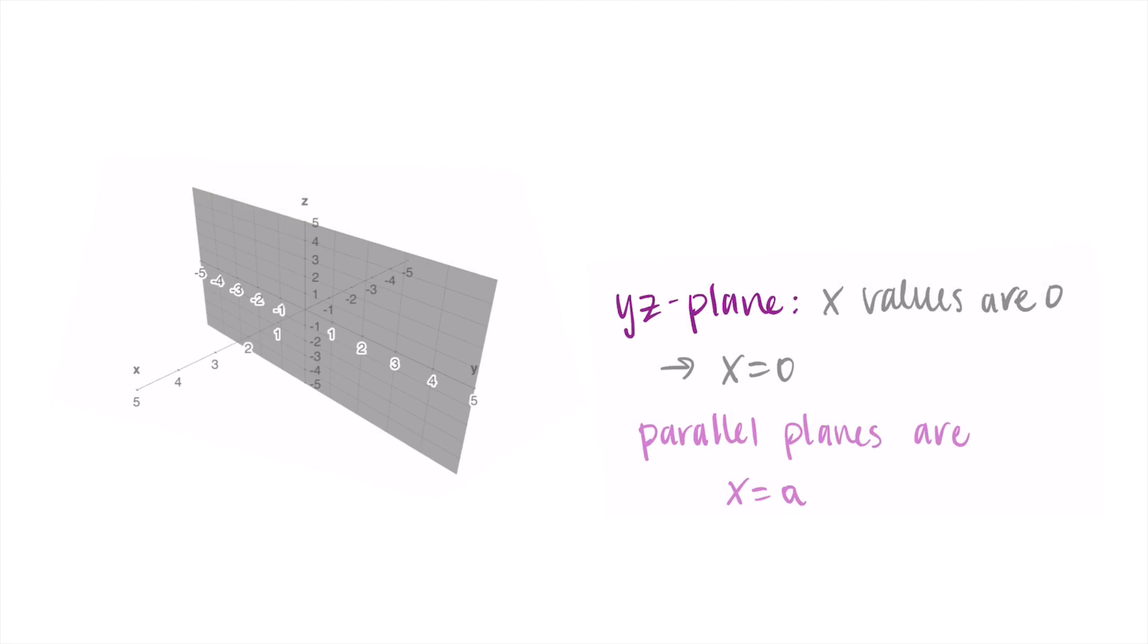So just like in two dimensions, how maybe x equals a is a vertical line or y equals b is a horizontal line, here x equals a is a plane, y equals b is a plane, and z equals c is a plane. So we just kind of upgrade by one dimension and instead of having lines, we have planes in three dimensions with this type of formula.